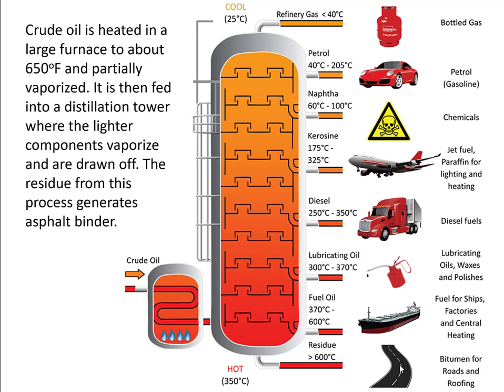During this process, different products are separated at different temperatures. The main products include gasoline, kerosene, and diesel oil. The asphalt residue is a lower-valued product than the other components, so refineries are set up to produce those more valuable fuels. Asphalt is just a byproduct of this process — if we don't use it, it's wasted.